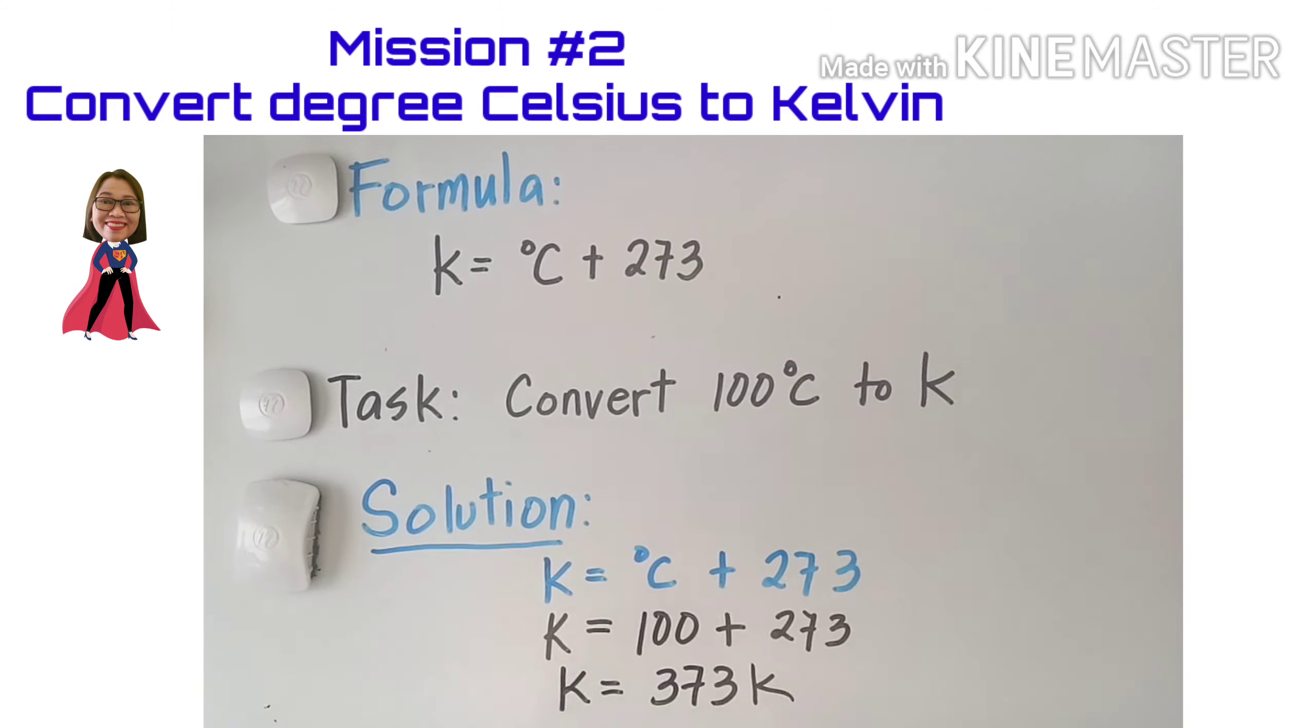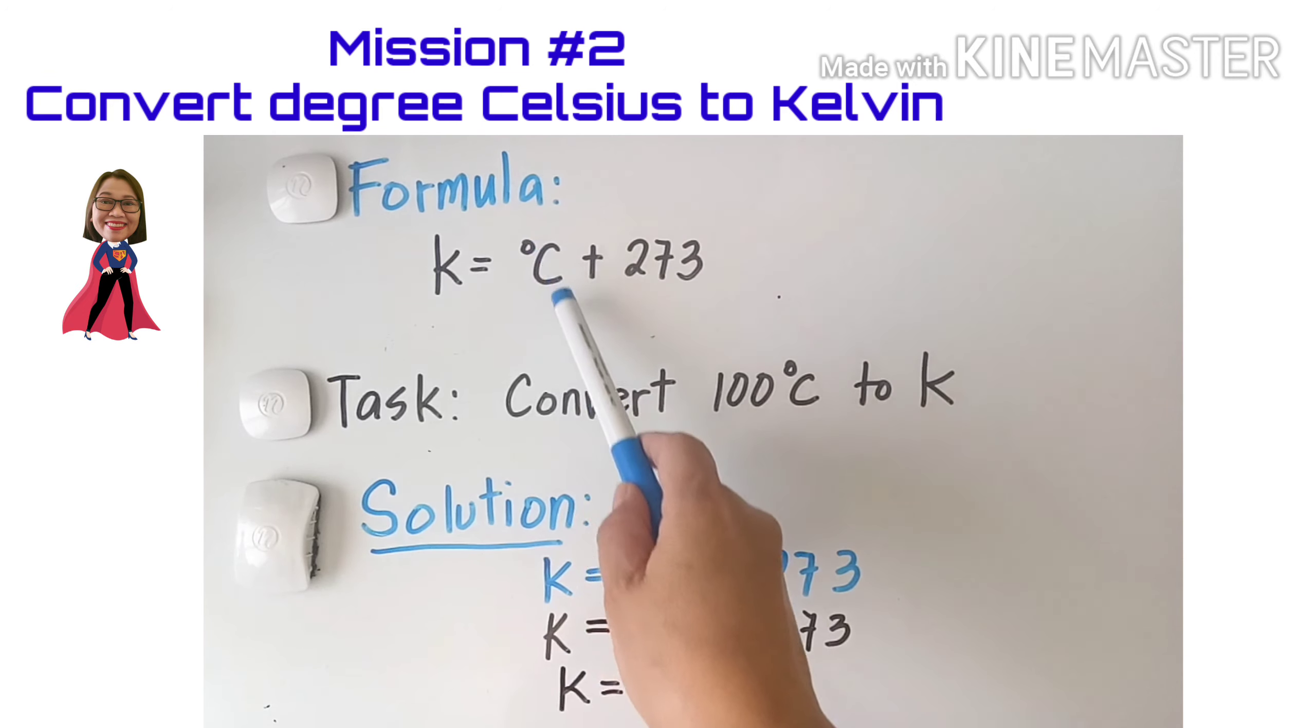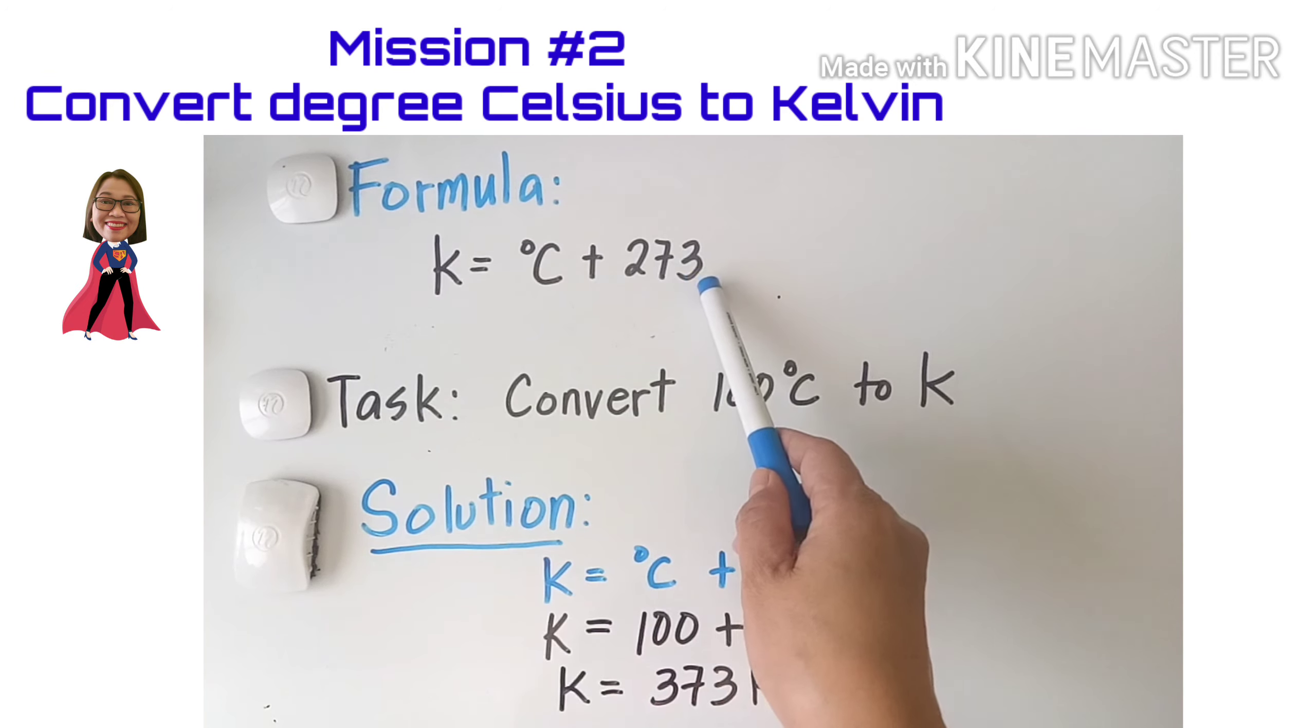Alright, so this time we're going to convert 100 degrees Celsius to Kelvin. Using this formula, Kelvin equals degrees Celsius plus 273.